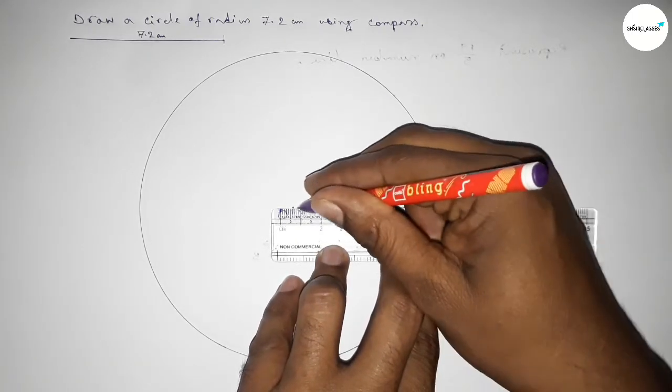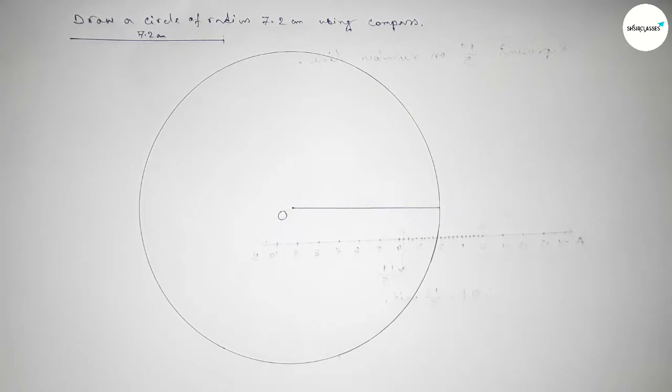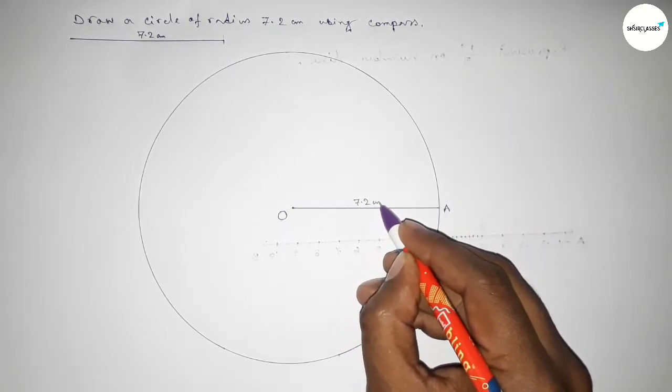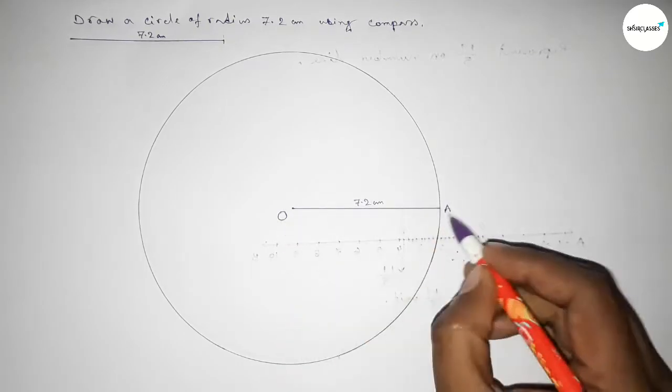This is the radius of the circle. Taking here O to A, this is 7.2 centimeter. So radius OA equals 7.2 centimeter.